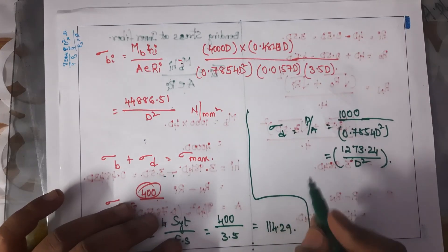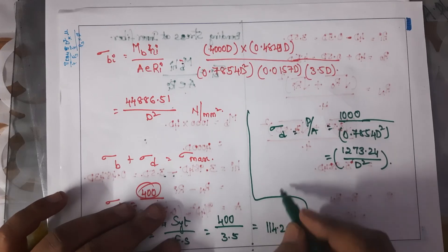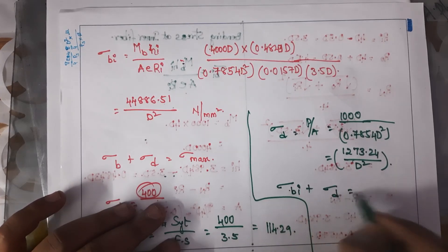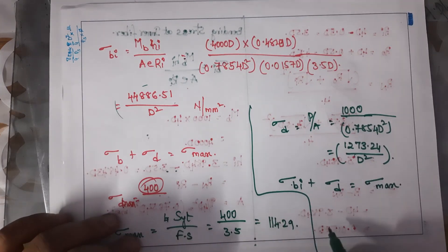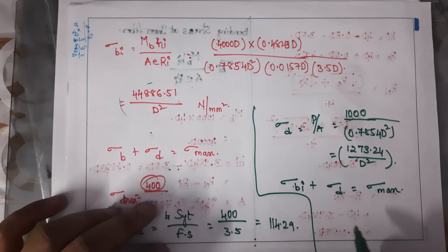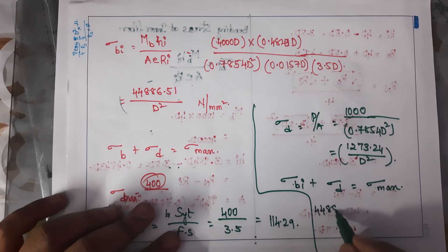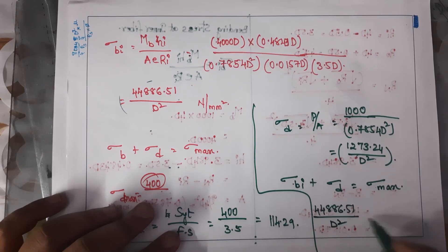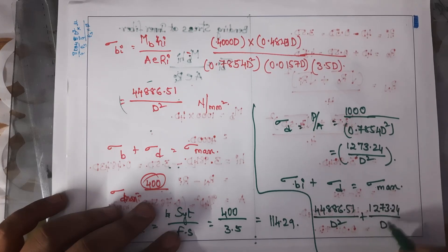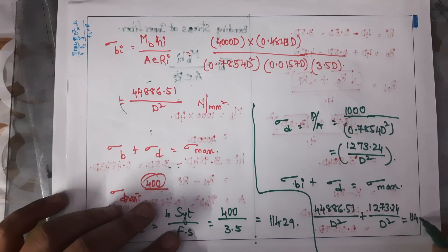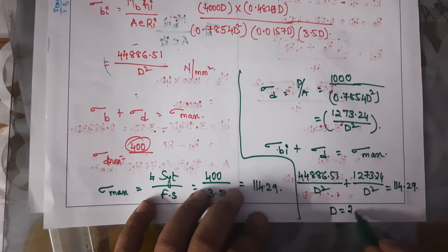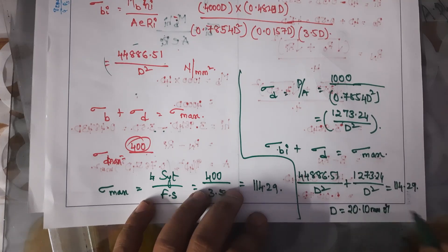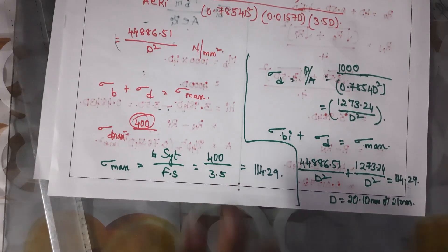Now, bending stress plus direct stress equals the maximum stress: 44886.51/d² + 1273.24/d² = 114.29. Taking LCM and solving, we get d = 20.10 mm, or approximately d = 21 mm. So this is the dimension of the link.